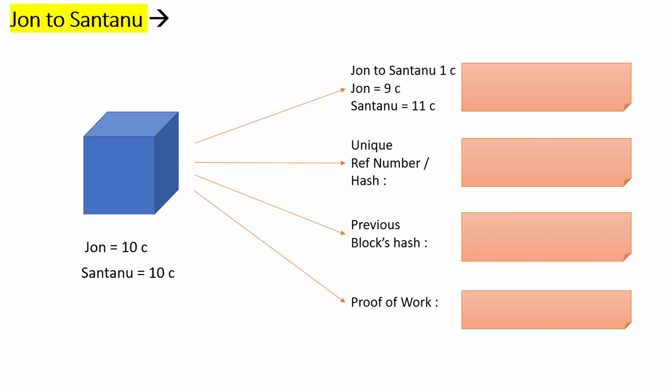It is calculated based on the content of the first and third compartments. When we enter the details of the first and third compartments of the block, you always get a unique reference number or hash. If you slightly edit or change the details, then your reference number will completely change.